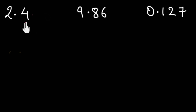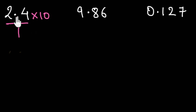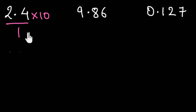If we need to convert 2.4 into its rational form, we need an integer in the numerator. I can write this as 2.4 divided by 1. Now, in order to get an integer in the numerator, I need to multiply by 10 since we just have one digit after the decimal. And since we don't want the value of this number to change, we need to do the same thing in the denominator — multiply the denominator by 10 as well.